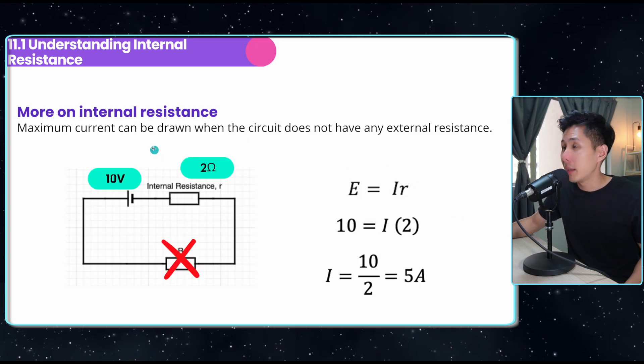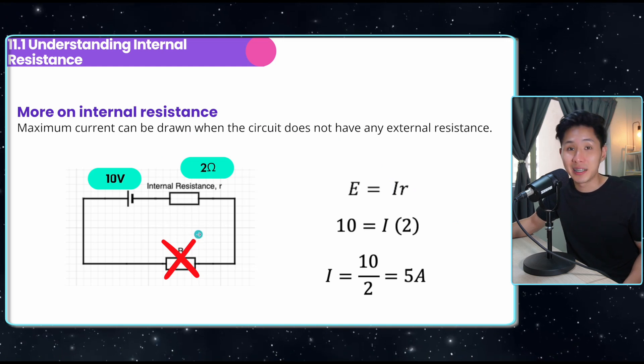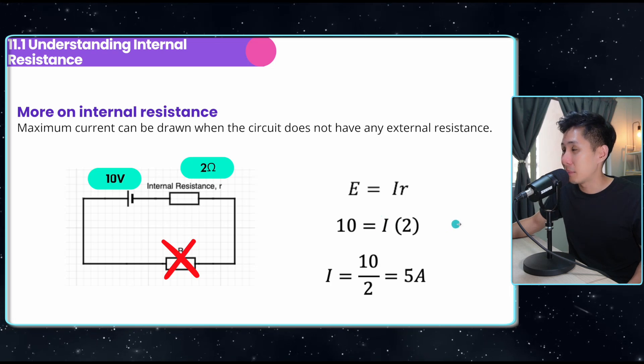A little bit of common sense: maximum current can be drawn when the circuit does not have any external resistance. Because of that, you can see that I will be maximum, 5 amperes.